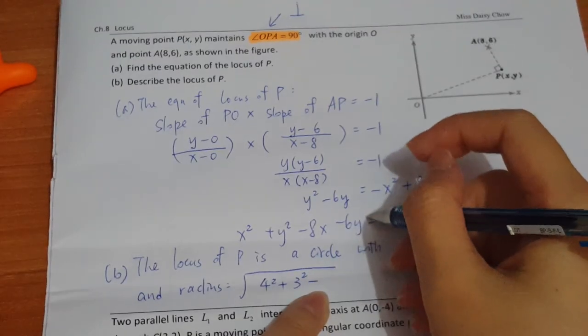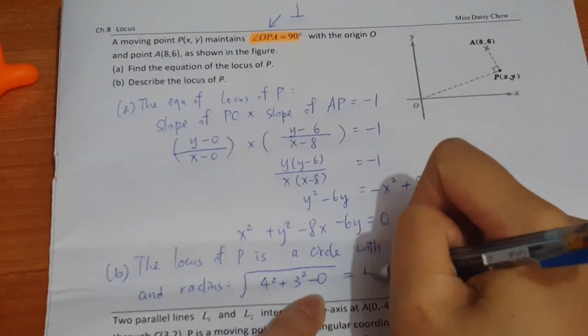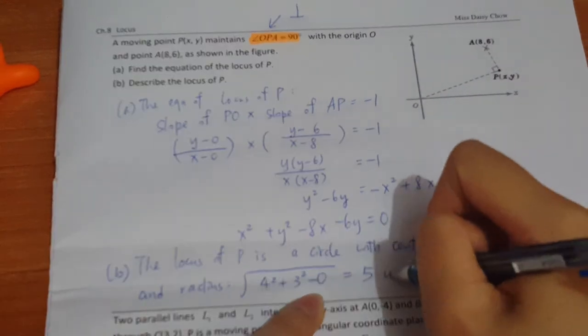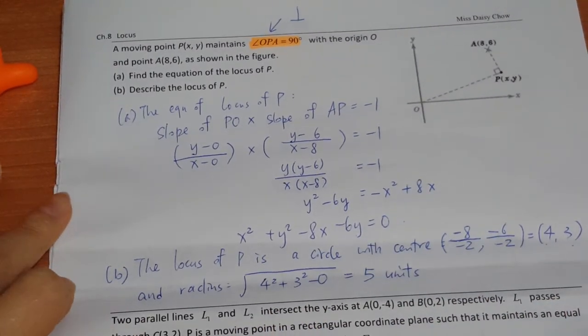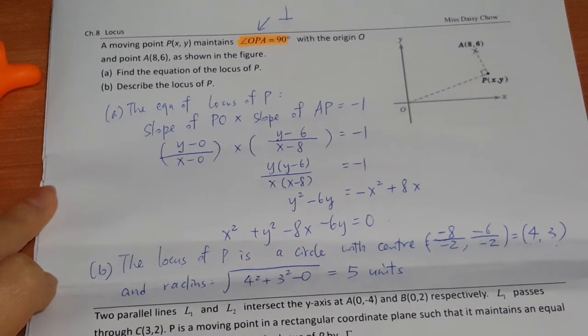So the radius would be the square root of 4 squared plus 3 squared minus F. There's no F, no constant, so minus 0, which will give you 5 units. So this one should be easy.